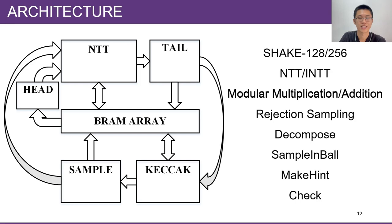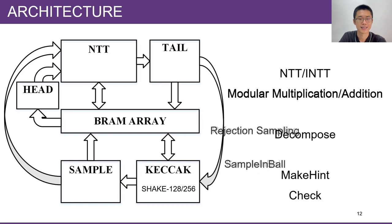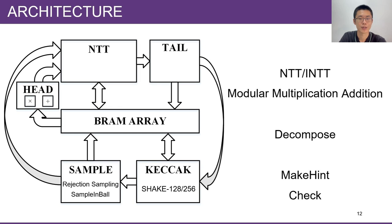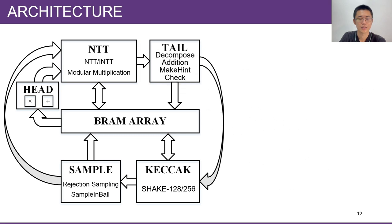To perform these operations efficiently, we designed this architecture which contains a BRAM array and five modules. The Keccak module is used for SHAKE-128 and SHAKE-256. The Sample module can perform rejection sampling and SampleInBall. The HEAD module contains a modular multiplier and modular adder. The NTT module computes NTT or iNTT in a pipeline manner with four multipliers for four-way parallel multiplication. The TAIL module contains the Decompose module, a modular adder, the MakeHint module, and comparators to check security conditions.